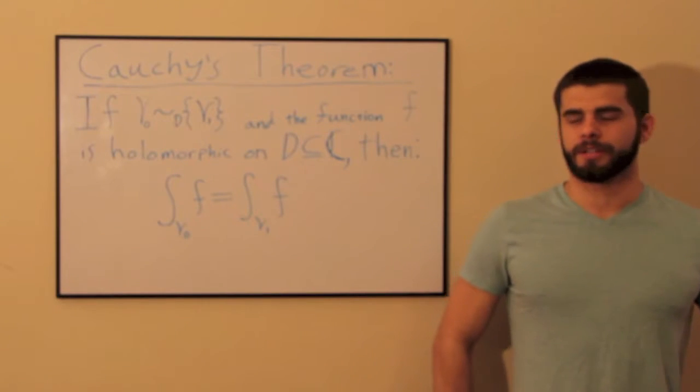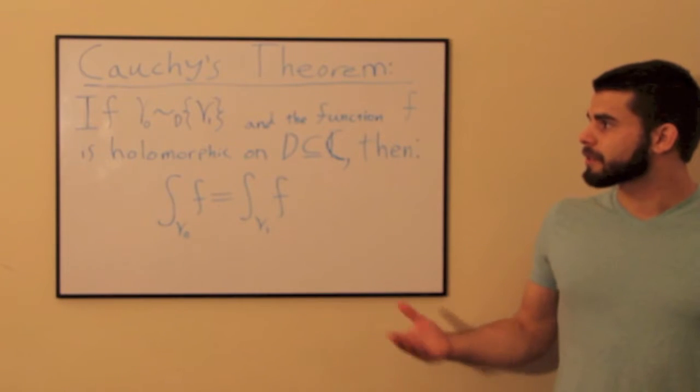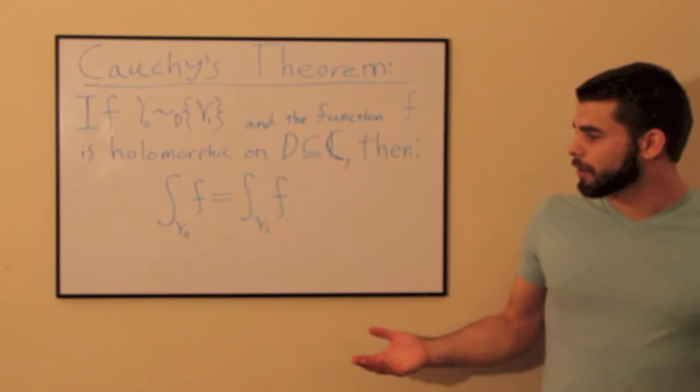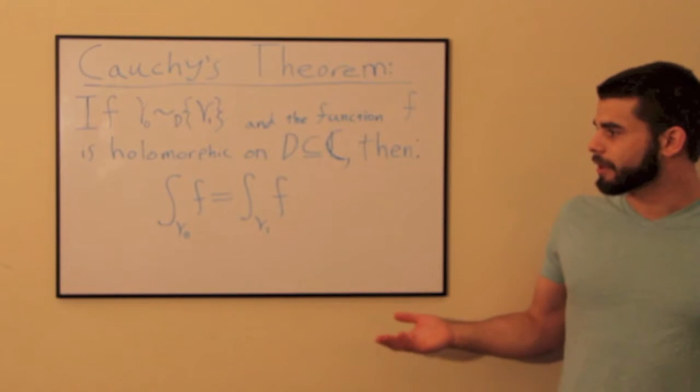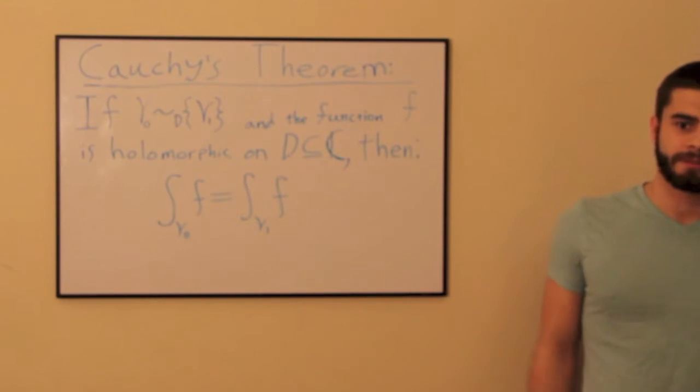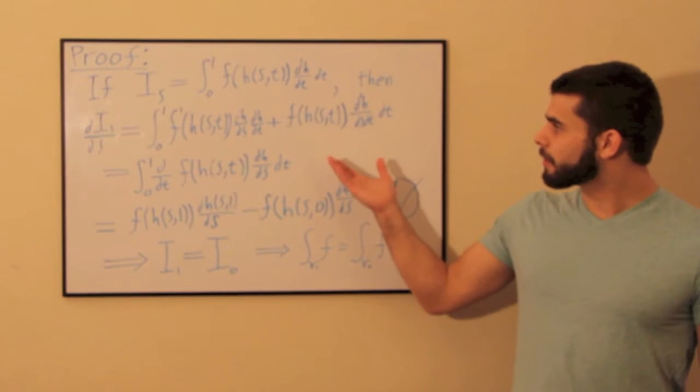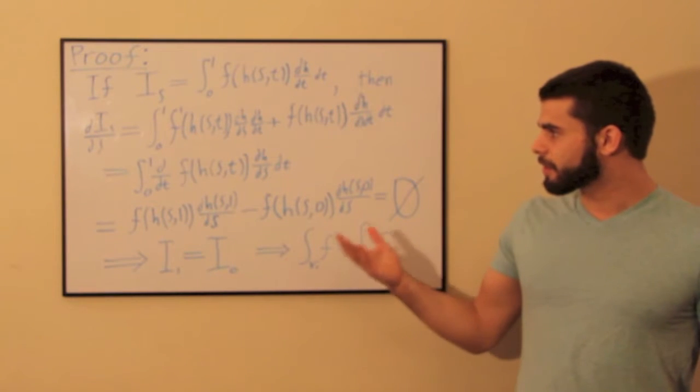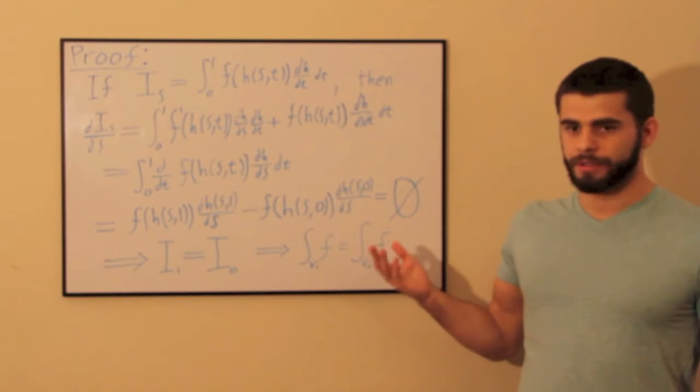The first theorem we need to understand is Cauchy's Theorem, which states that for two homotopic curves, gamma-naught and gamma-1, in a complex domain D, and a holomorphic function F, the integral over gamma-naught of F is equal to the integral over gamma-1 of F. The theorem is proven as follows by taking the definition of the homotopy H and properties of the integral to show that the rate of change of the integral of the holomorphic function over two homotopic curves is zero, and the integral over the two curves is therefore equal.